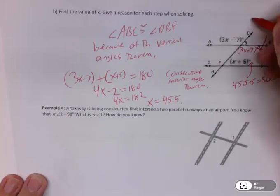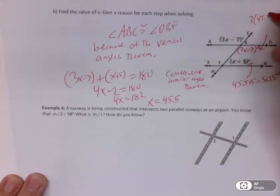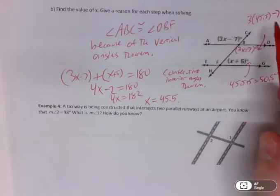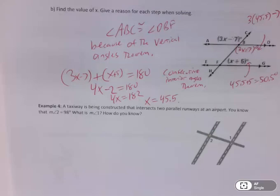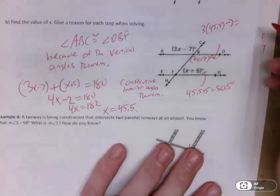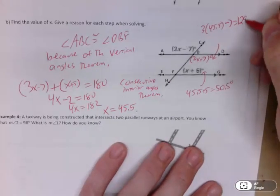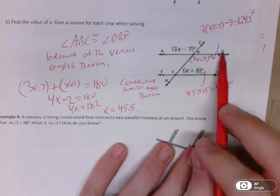Now I'll plug it into here. 3 times 45.5 minus 7. What's that become? This is going to be 90, 135, 136.5, I think. 45.5 times 3, yep, minus 7 is 129.5 degrees is angle DBF.